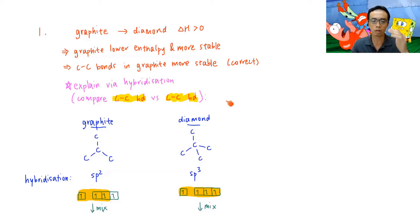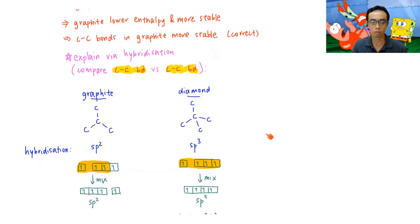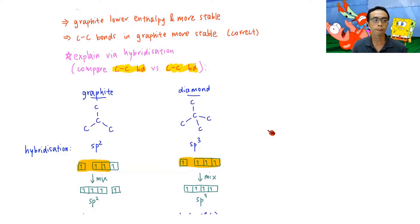We don't really need all this detail to determine Option 1 is true, but it is interesting to discuss. If I consider the carbon-carbon single bond in the data booklet, there is only one value, so energetics alone cannot differentiate between the carbon-carbon single bond in graphite and the one in diamond.